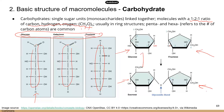If you put the two ends of that linear structure together, it forms either a hexagon structure or a pentagon structure. You will see a lot of hydroxyl groups attached to the ring, and that's what makes sugar very water-soluble, because the hydroxyl group is very polar — it likes water.